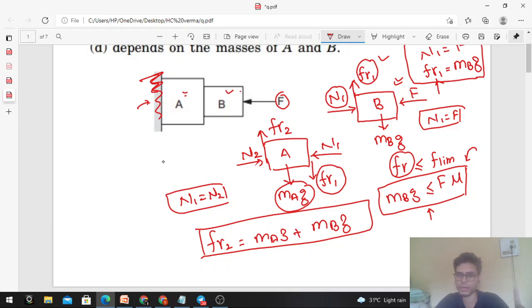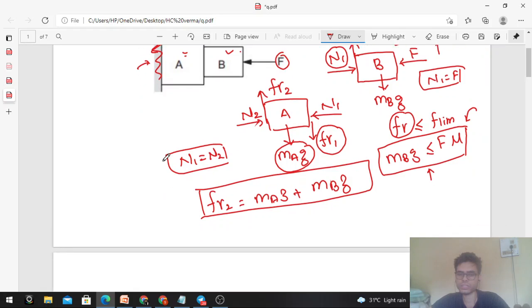So this is the friction force required for block A in equilibrium. Further, you can get the condition. Direction, what is FR2? Upward. Magnitude also has been found. Further condition, that FR2 should be less than or equal to its limiting value. Limiting value is normal reaction into mu. Here is the coefficient of friction which we call mu dash.